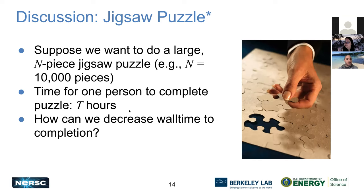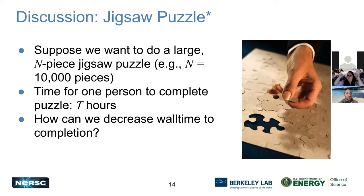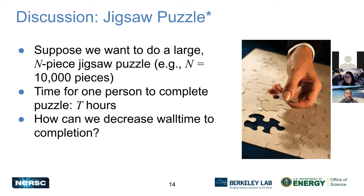Now for a discussion: let's talk about doing a jigsaw puzzle. We have an N-piece puzzle where N is large — say 10,000 pieces. If one person takes T hours to complete it, and for argument's sake everyone solves puzzles at the same rate, how can we decrease the wall time to completion — meaning the elapsed clock time — by getting help from friends?